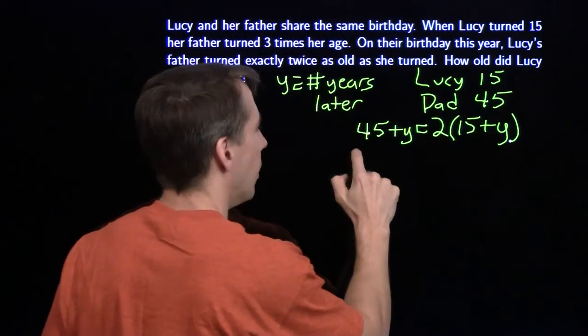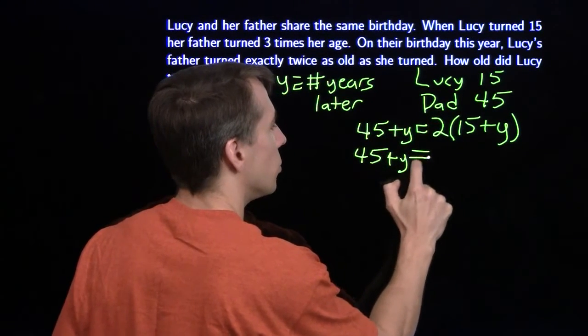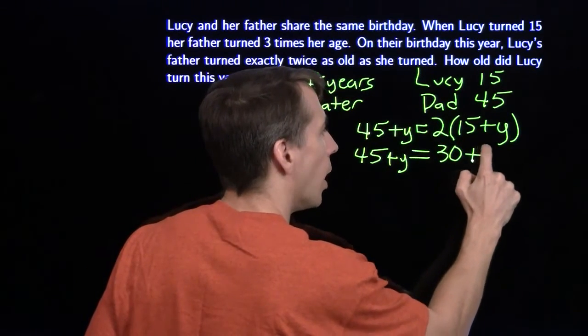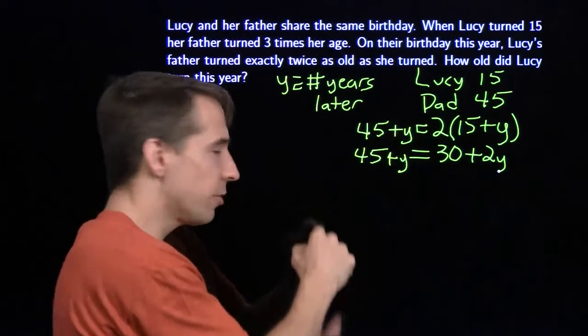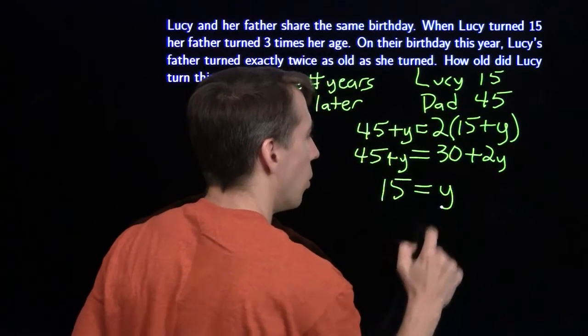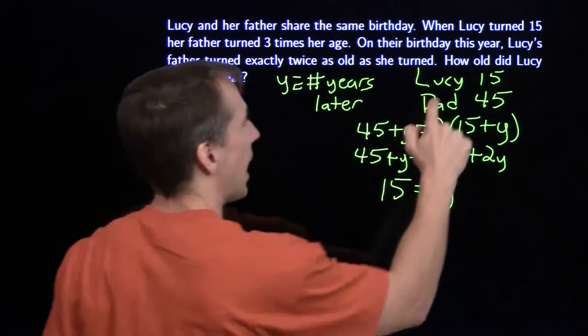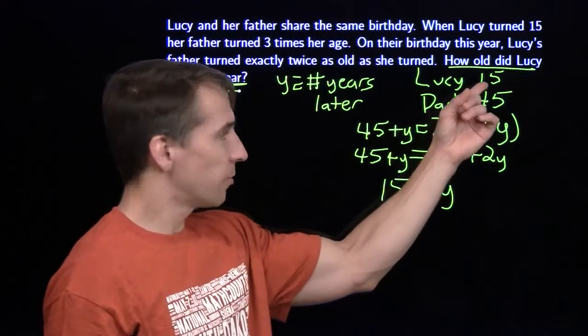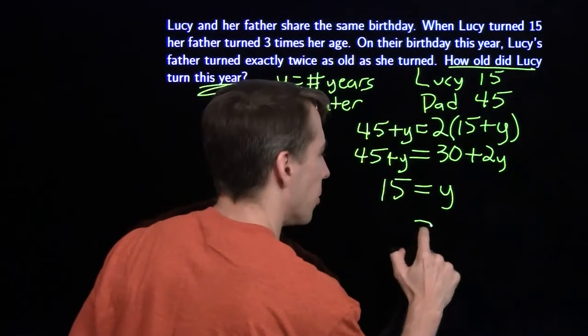I've got an equation. We can just pound this out. We've got 45 plus y equals 2 times 15 is 30, 2 times y is 2y. I subtract y from both sides, subtract 30 from both sides, and we have 15 equals y. We got to go back and check and make sure we answer what is asked. How old is Lucy this year? She was 15 at the beginning. Y years later, 15 years later, she's 30 years old.